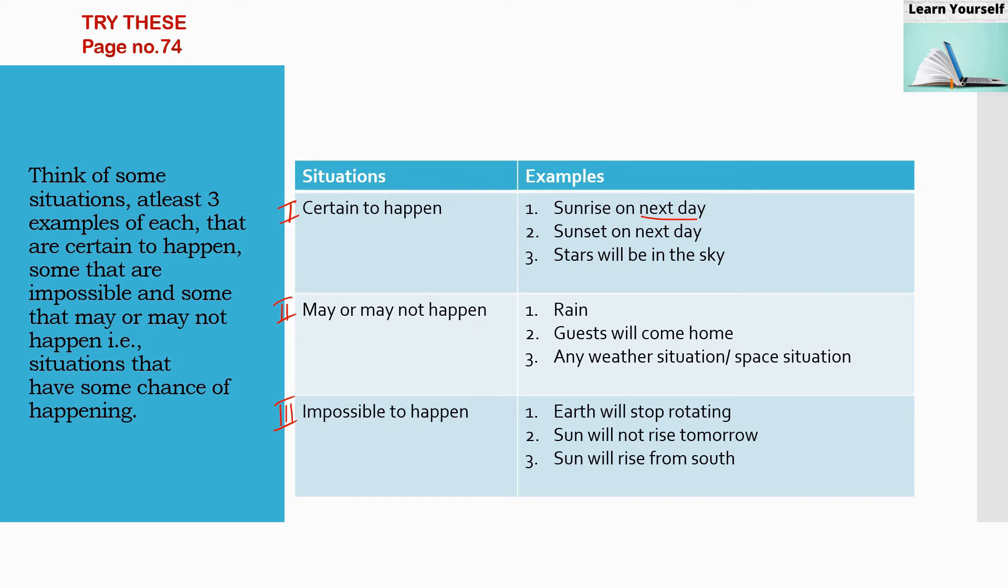Third situations are impossible to happen, which is not going to happen. So whatever you have written here as certain to happen, opposite to that you can write it in impossible to happen. For example, first is Earth will stop rotating. Second, sun will not rise tomorrow or sun will rise from south, or you can write any other direction.